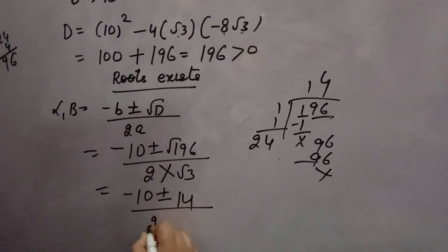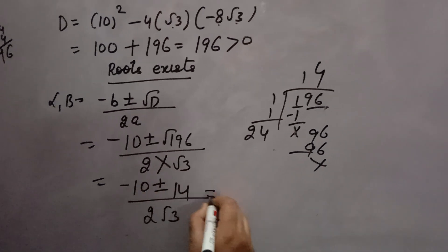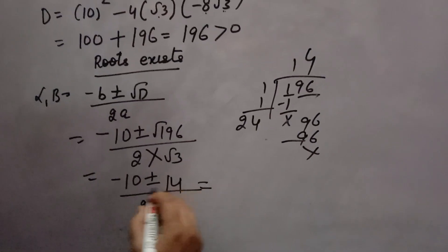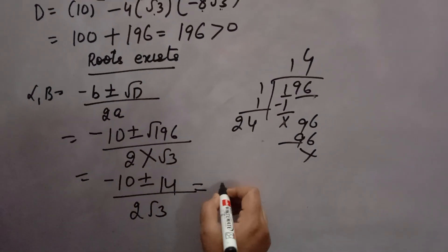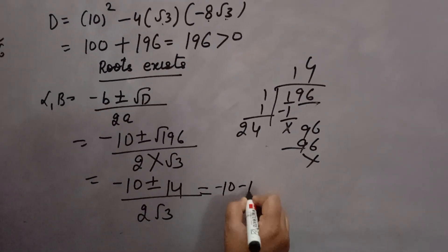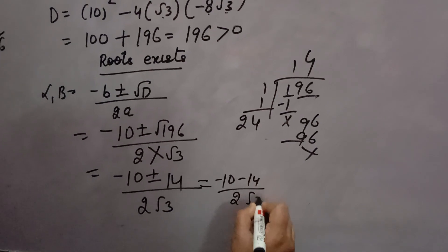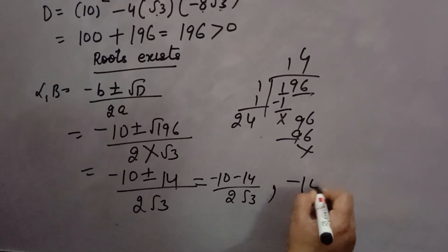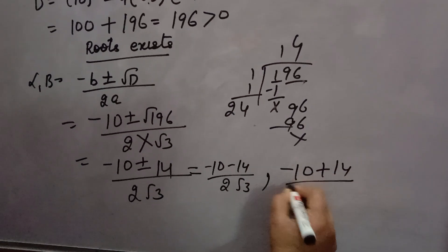14 will come over 2 root 3. Now, one time you will add and one time you will subtract for finding the root. Minus 10 minus 14 over 2 root 3. One root, another will be minus 10 plus 14 over 2 root 3.